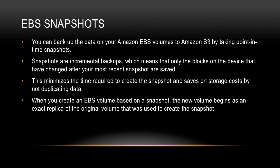Now let's talk about EBS snapshots. We can back up the data on EBS volumes to Amazon S3 by taking point-in-time snapshots. Snapshots are incremental backups, which means only the blocks on the device that have changed after your most recent snapshot are saved. For example, if you have taken two snapshots, snapshot two only contains data on files that have changed after the first snapshot. This approach minimizes the time required to create the snapshot and also saves on storage cost by not duplicating data.